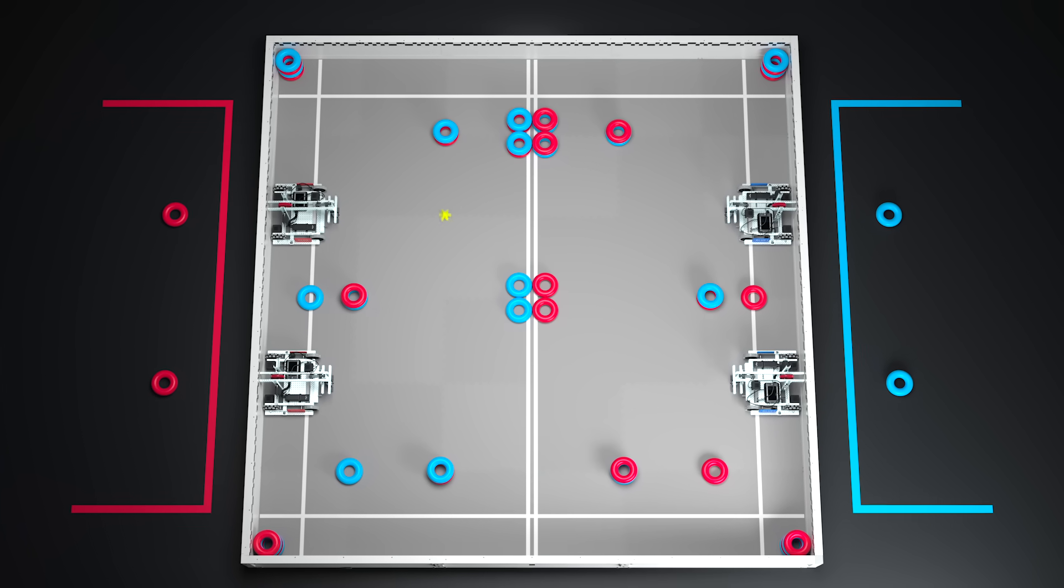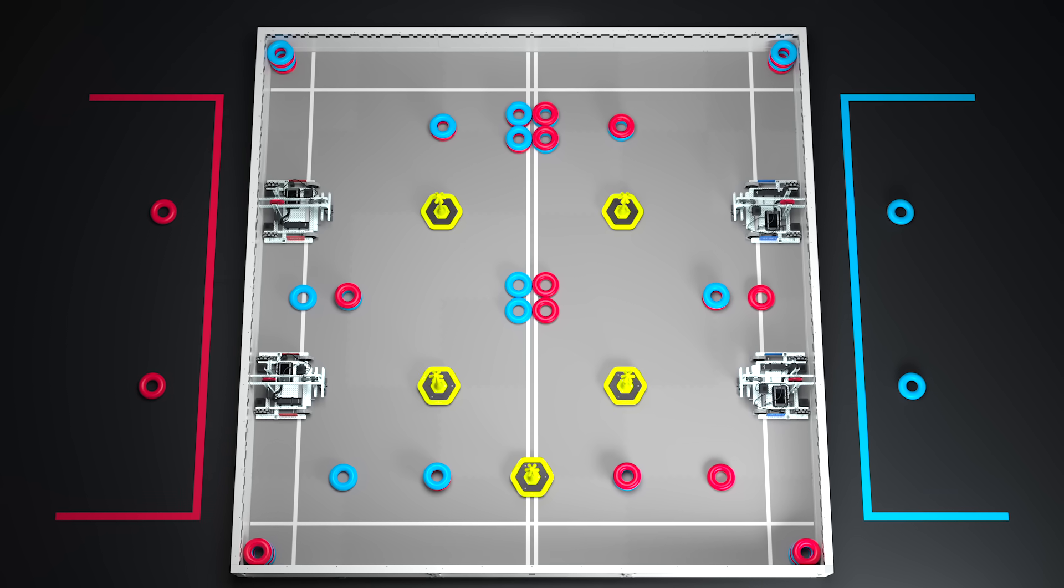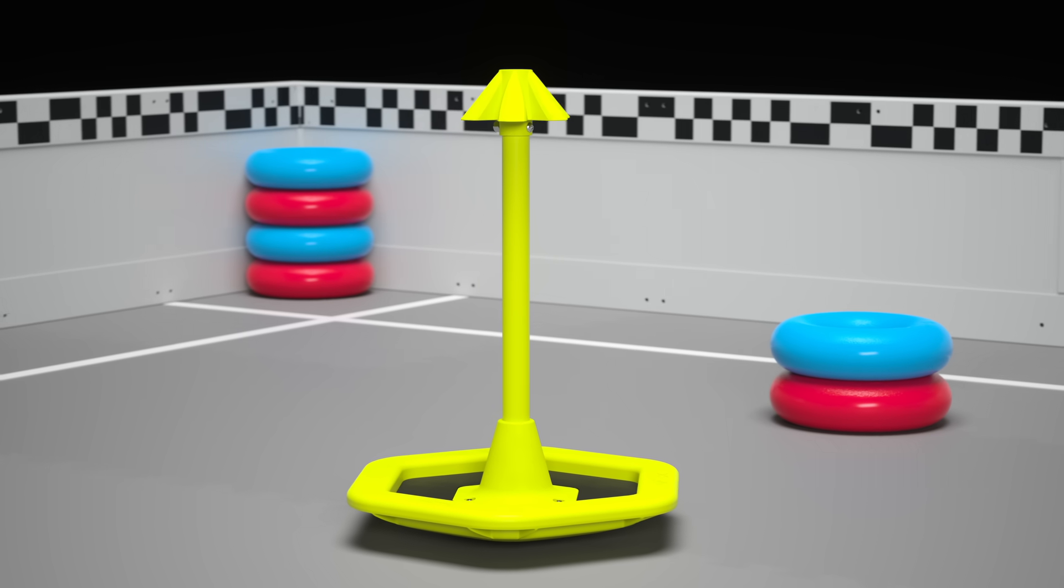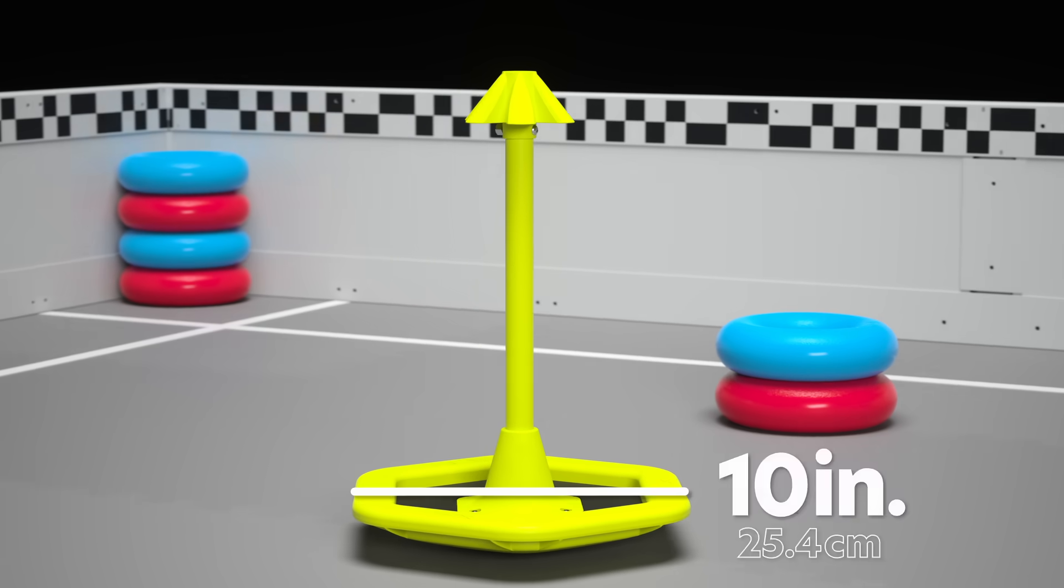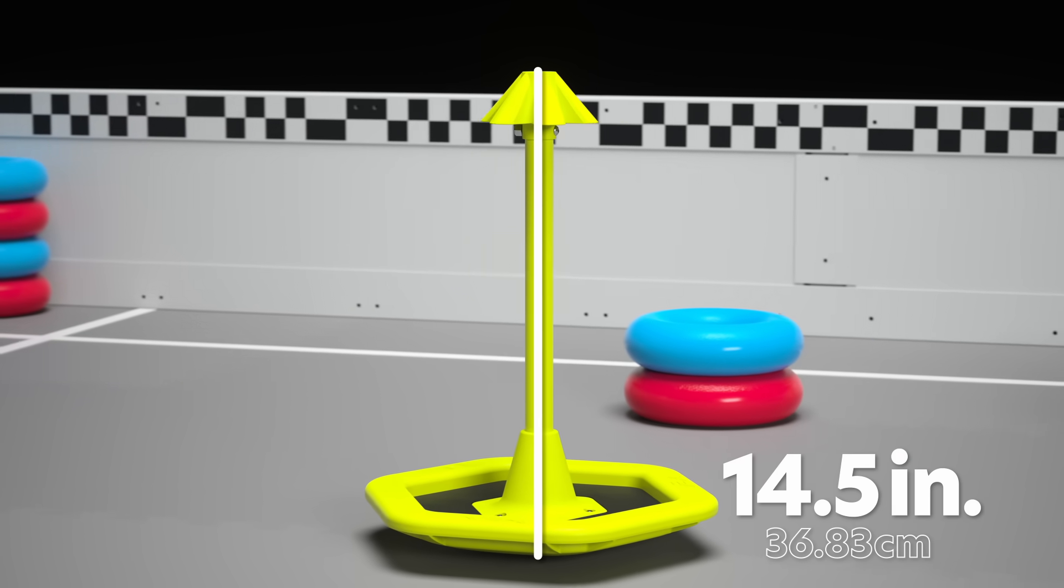There are also five hexagonal mobile goals that can be used by either alliance. Mobile goals have a maximum diameter of 10 inches and an overall height of 14.5 inches.